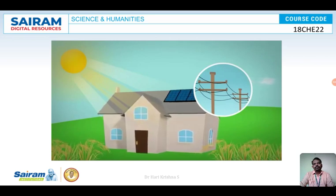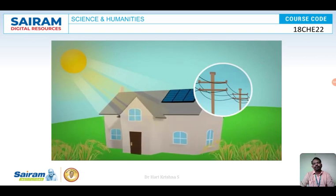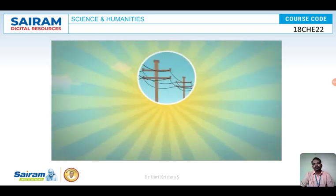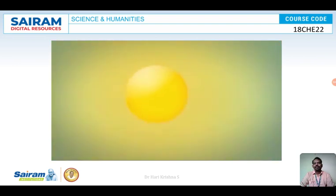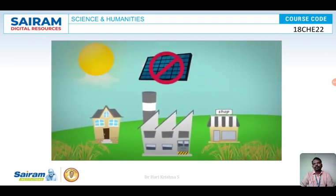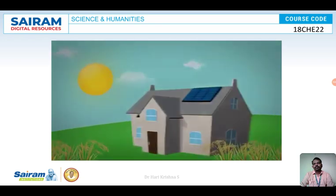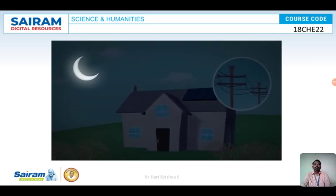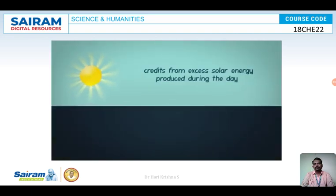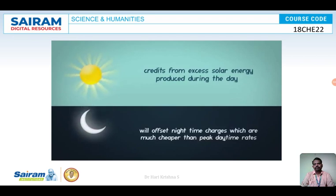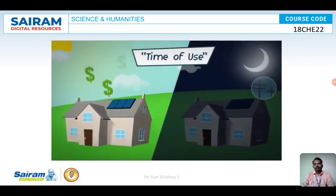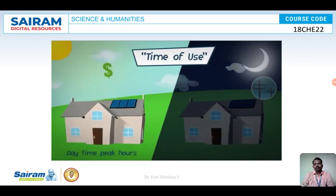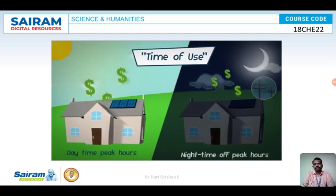Anytime the panels produce more energy than you are using, the excess energy is sent back to your utility company — a concept called net metering. The utility company purchases your excess solar electricity and sells it to homes and businesses in the neighborhood. Credits from excess solar energy produced during the day offset nighttime charges, maximizing savings through time-of-use billing where you sell energy during daytime peak hours and buy during nighttime off-peak hours.